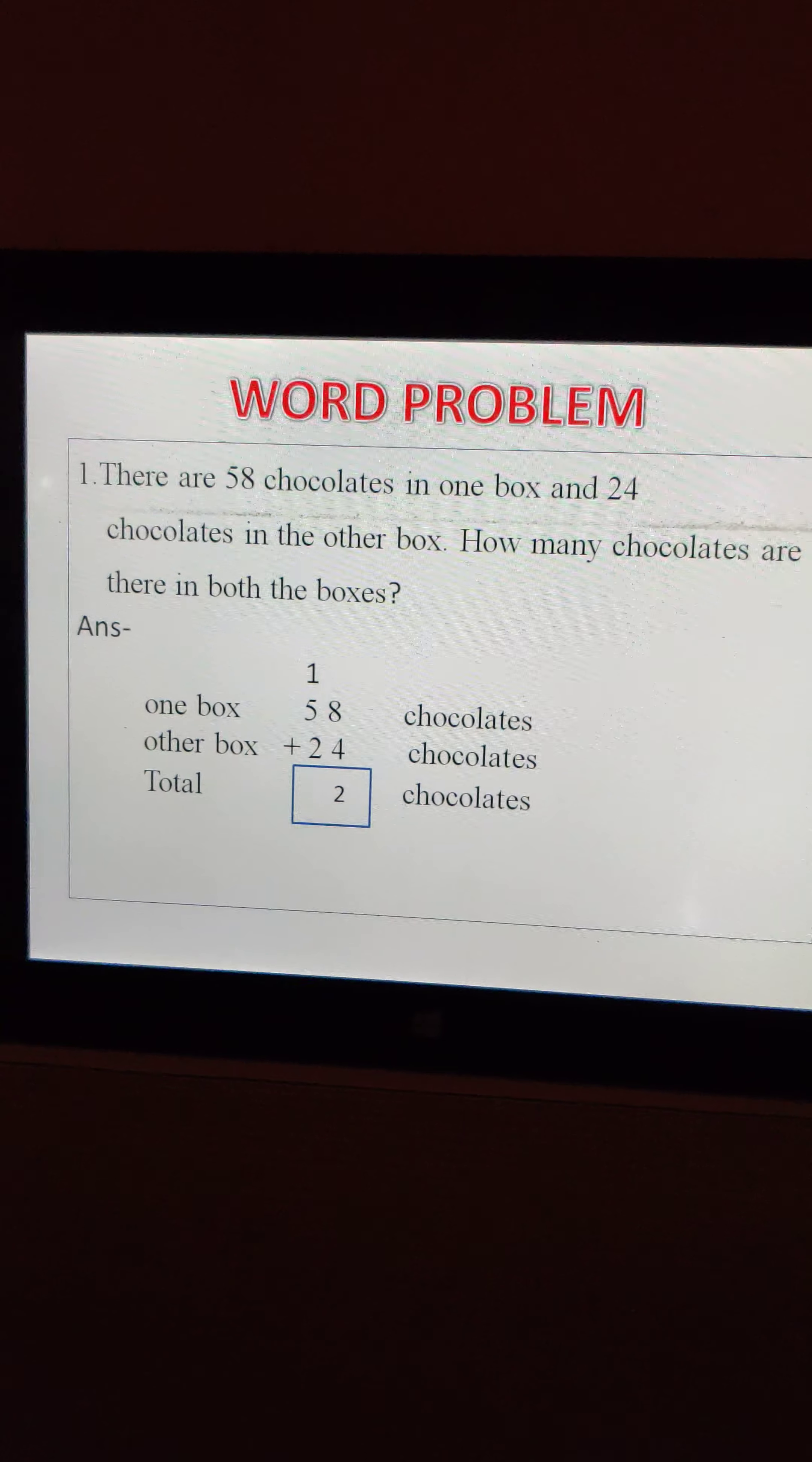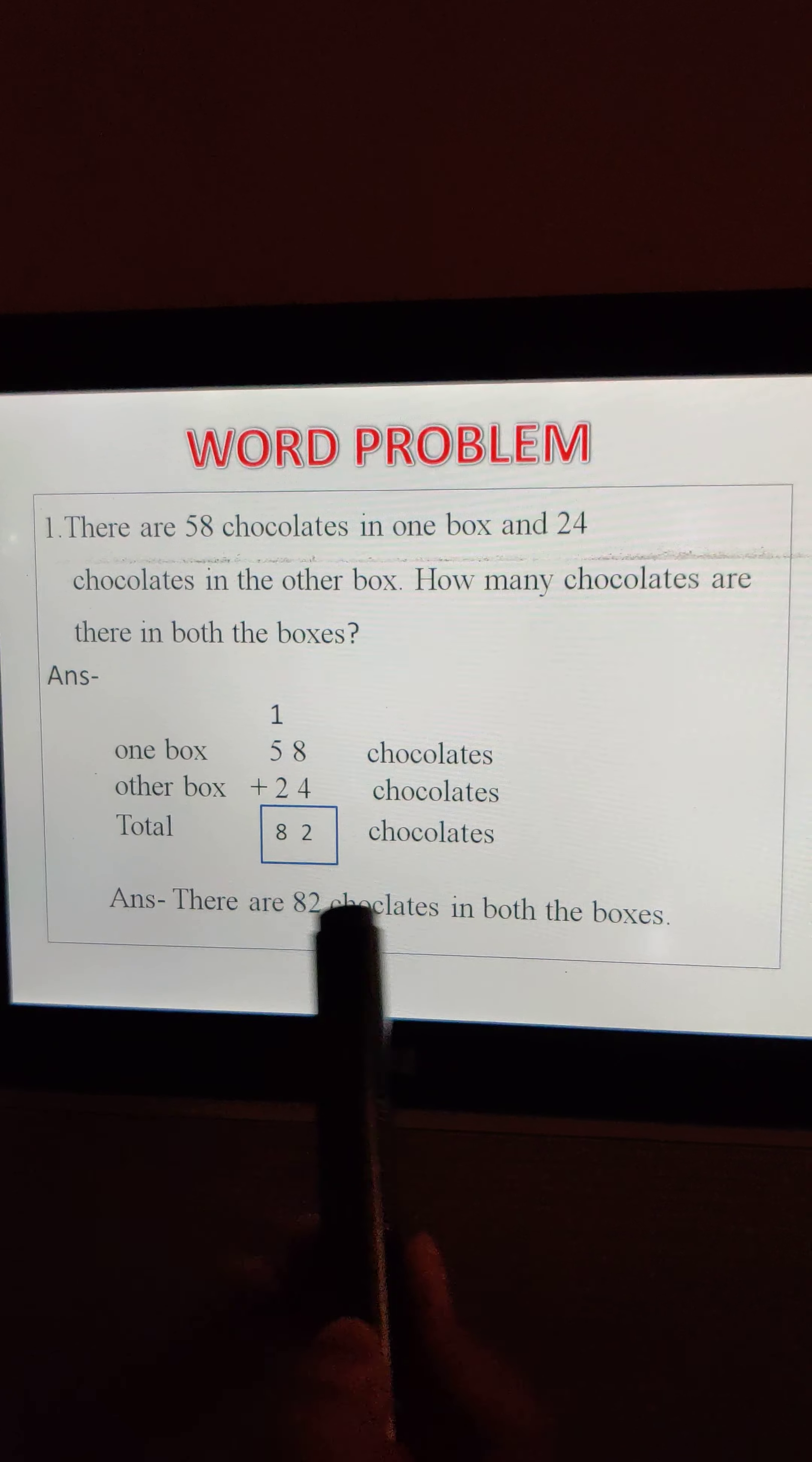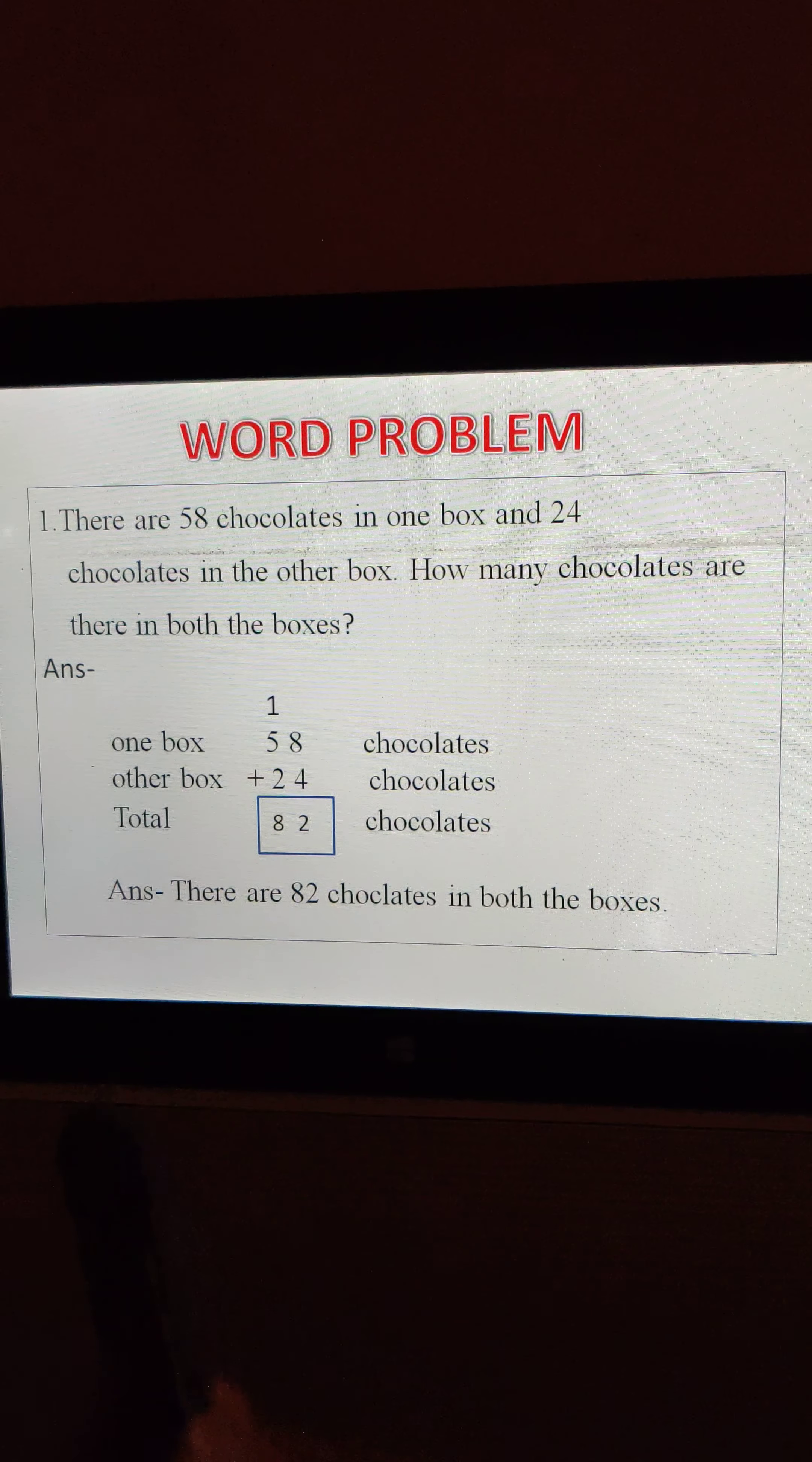Then 5 plus 1, 6 and 7, 8. So how many chocolates? 82 chocolates are there. So then you need to write this answer also after leaving a line. Answer: there are 82 chocolates in both the boxes.